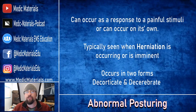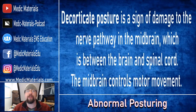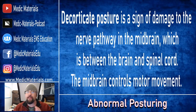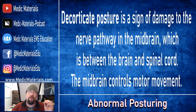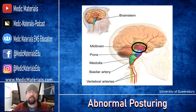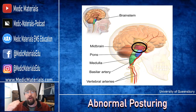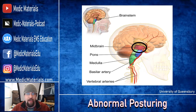Typically it occurs in two forms, decorticate and decerebrate. Decorticate posture is a sign of damage to the nerve pathway within the midbrain, which sits between the brain and the spinal cord — that brainstem area. The midbrain controls motor function and motor movement. Here it is located in this black circle at the top of your brainstem. Typically you will see decorticate posturing earlier on because the pressure is hitting this midbrain first.